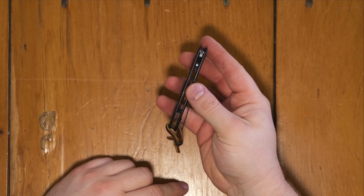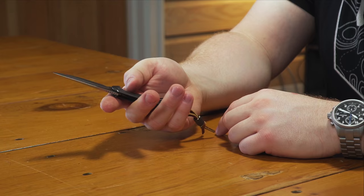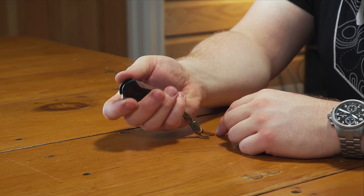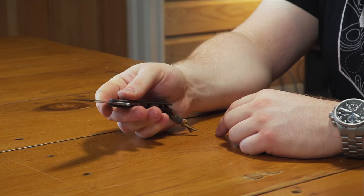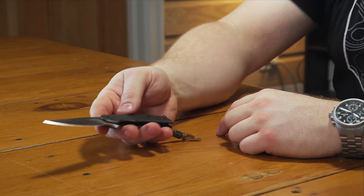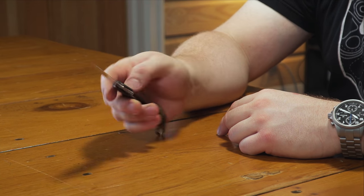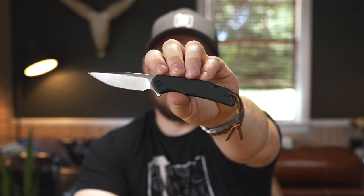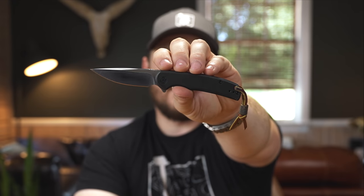And you do have a reversible deep carry pocket clip. But I think this is a really, really good knife. And it's $65. So for 65 bucks, you're really going to struggle to find a knife much better than this one. So anyway, that is the first knife that has been stealing all of the pocket time. And that is the Civivi Nox.